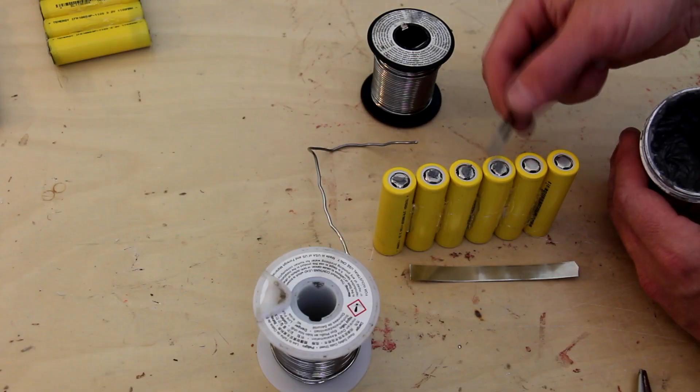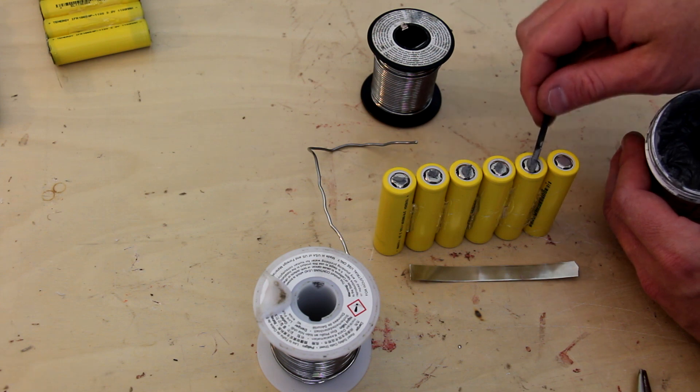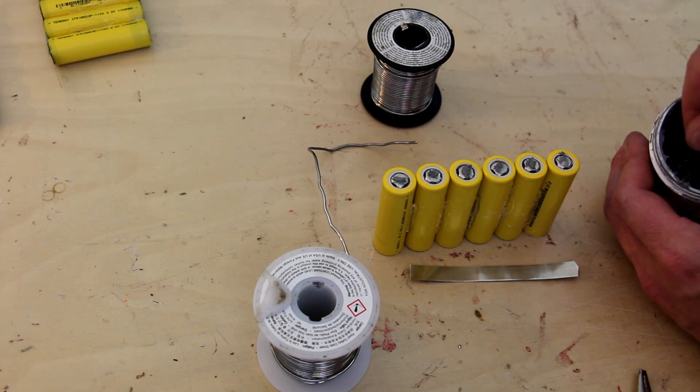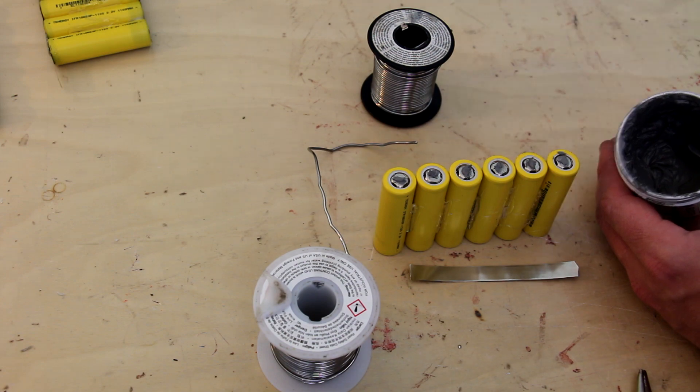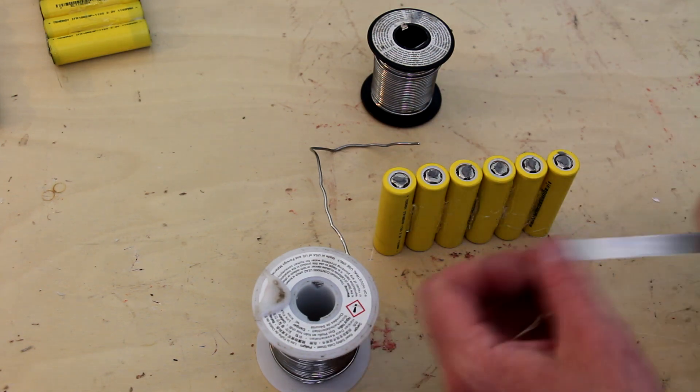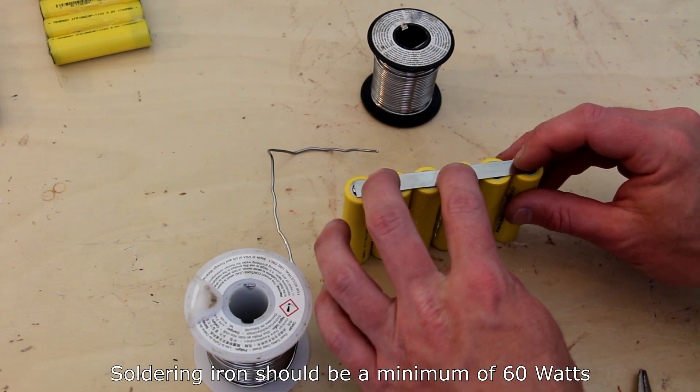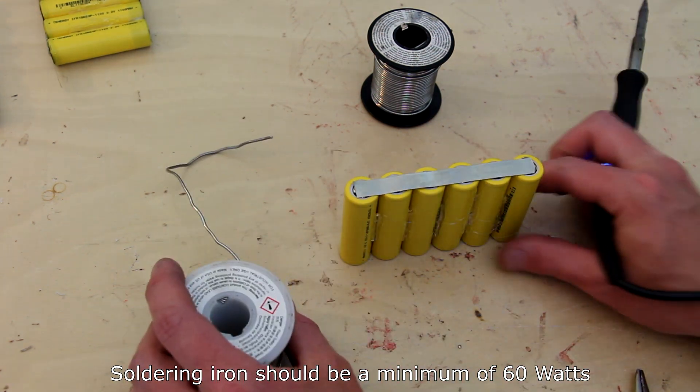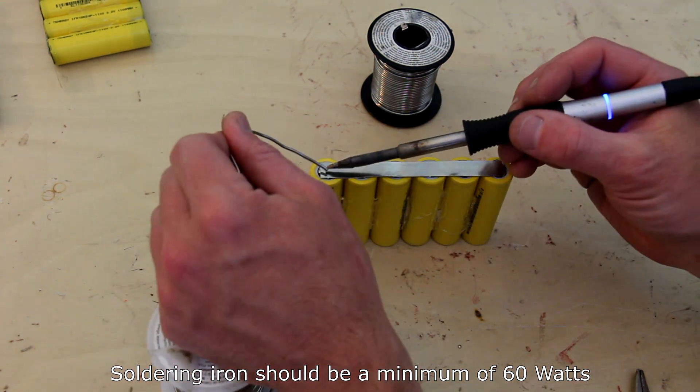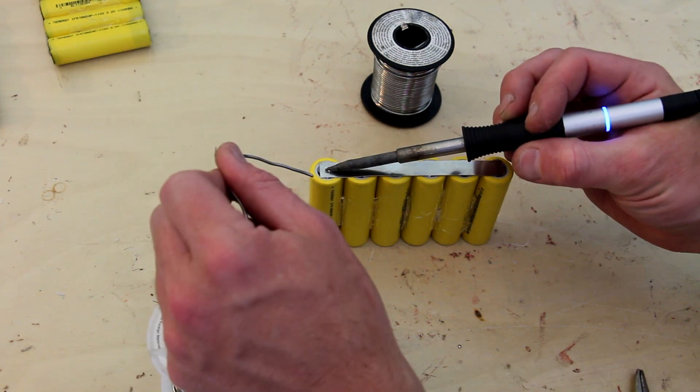To bond the nickel strip to the batteries I'm using soldering paste. Typically these are welded, but most people don't have a spot welder for these batteries and I find that soldering them works really well. I should note that a powerful soldering iron is going to be needed here. A weak soldering iron can overheat the cells with excessive time.